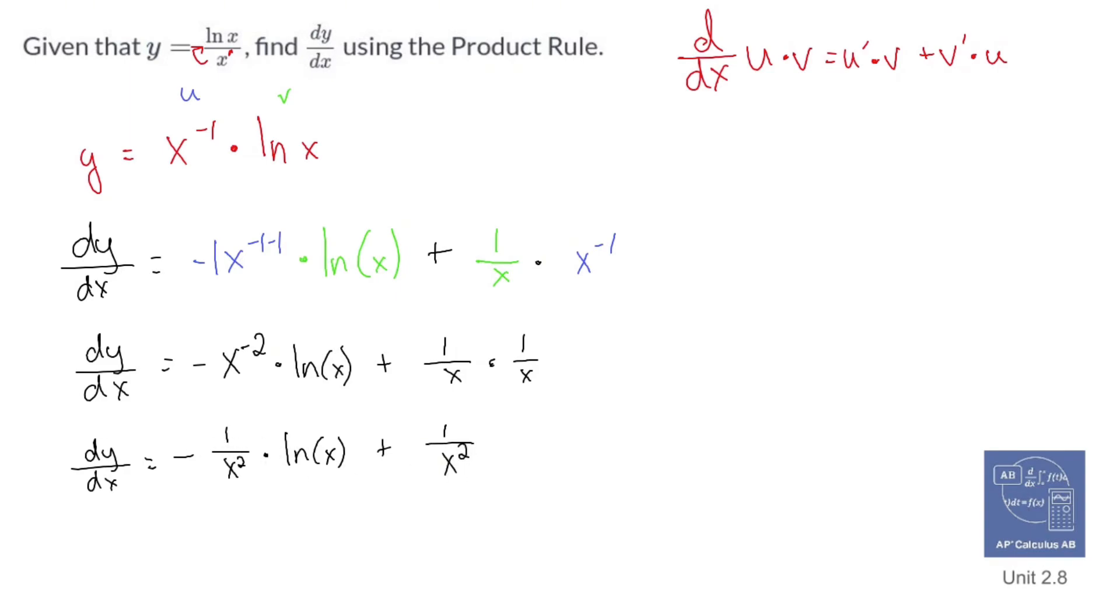Now let's multiply that ln of x to that one up there so we can combine these fractions. dy/dx equals negative ln of x over x squared plus one over x squared. Since these two fractions have the same denominator, we might as well just combine them.